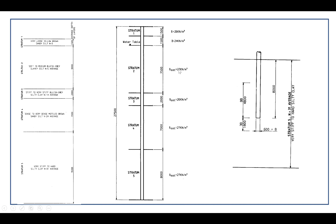For Stratum 5, gamma saturated is equal to 27 kN per cubic meter. Other soil parameters: for SPT values, Stratum 1 is dense sand and SPT N equals 3. Stratum 2 is clay and SPT N equals 5. This SPT value is the average value.